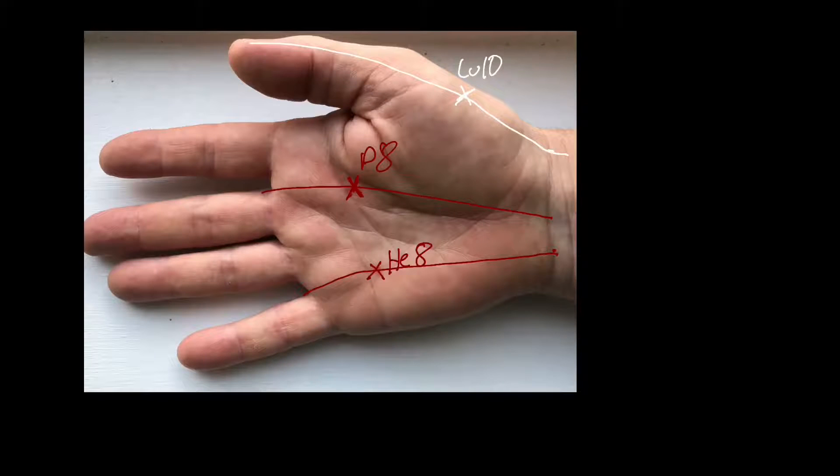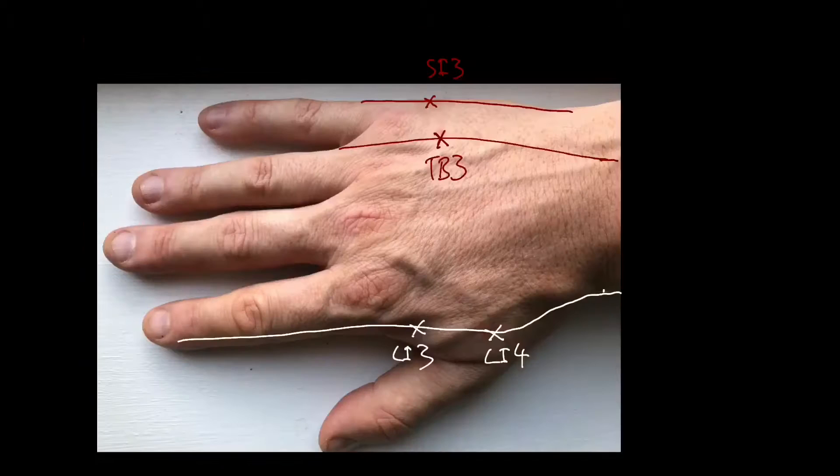On the palm we have heart 8, pericardium 8, and lung 10. From the dorsal view we can see small intestine 3, triple burner 3, and on the edge large intestine 3 passing through 4.